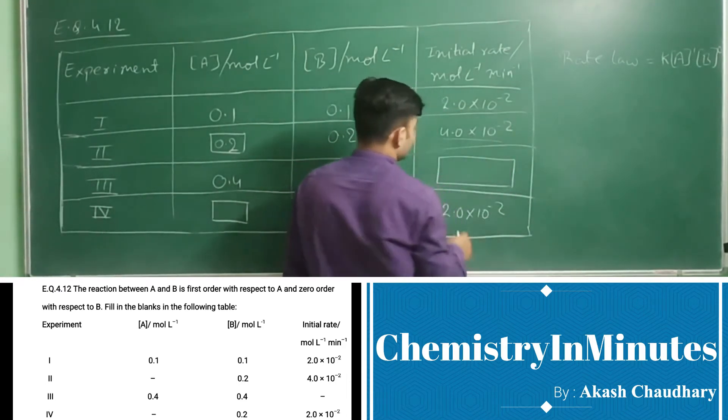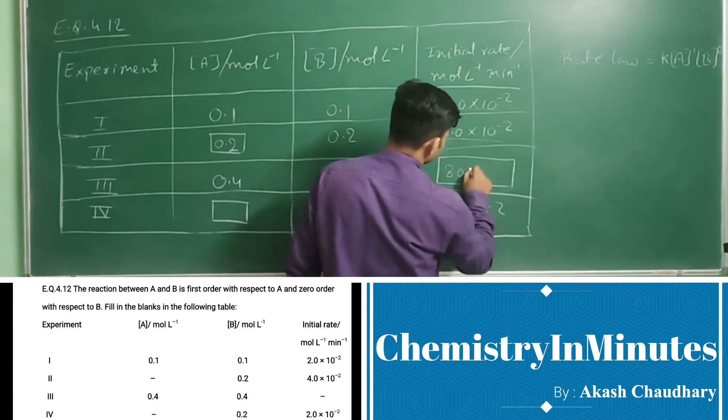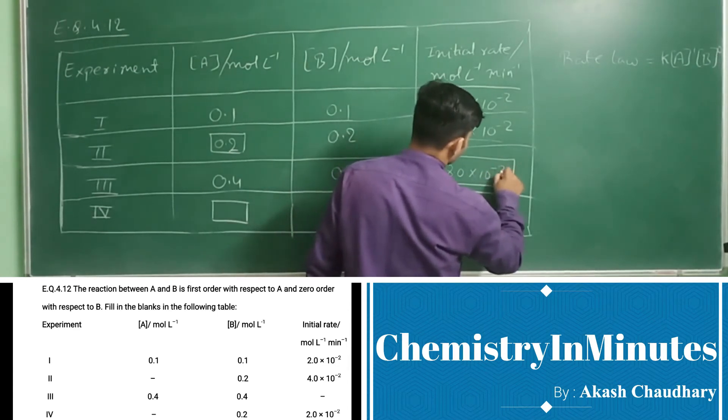Means in this blank there will be 8.0 × 10^-2.